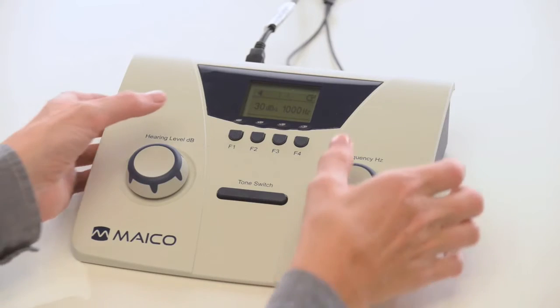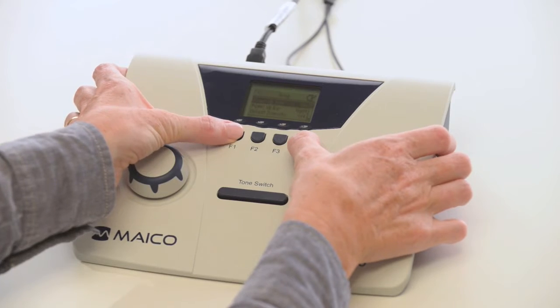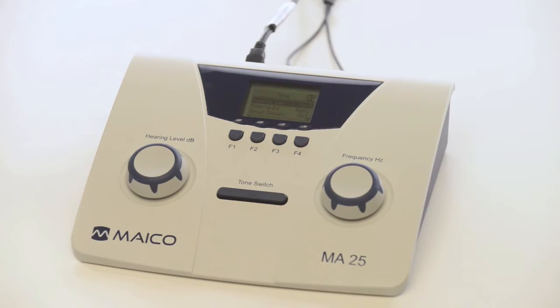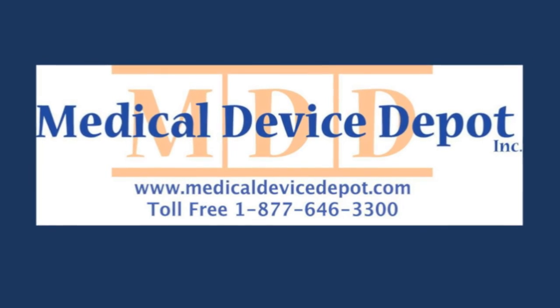To access the settings menu, press F1 and F4 simultaneously. For example, start intensities and frequencies can be adjusted to allow for faster testing times.